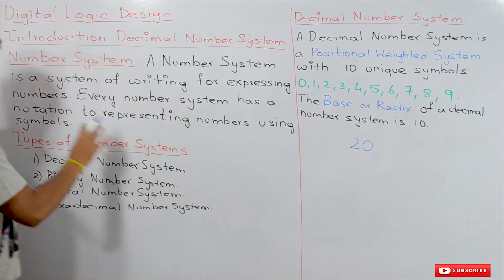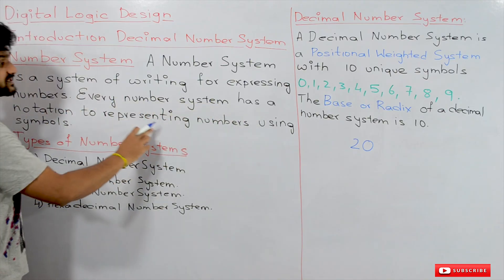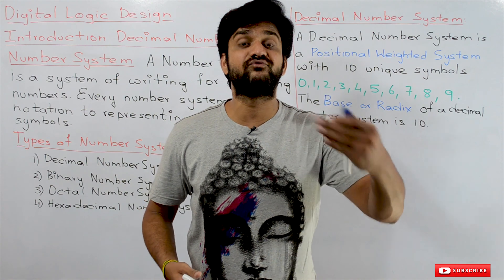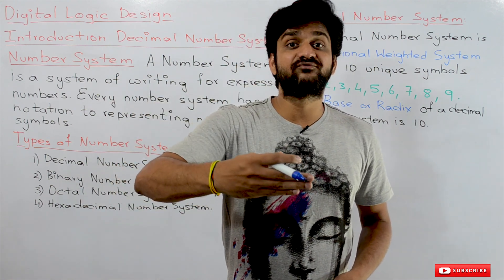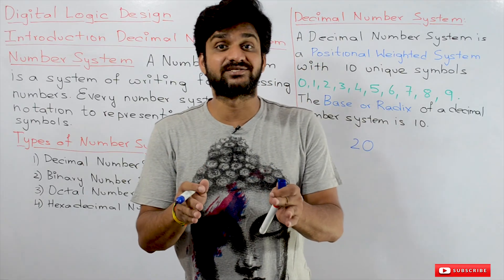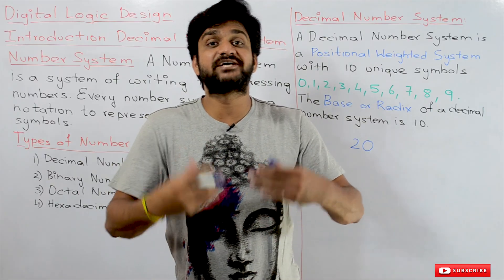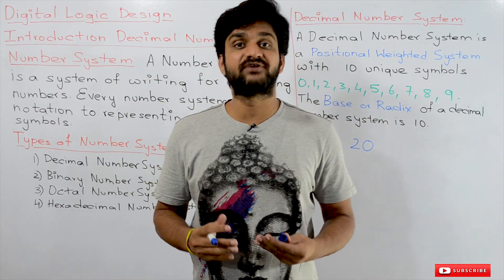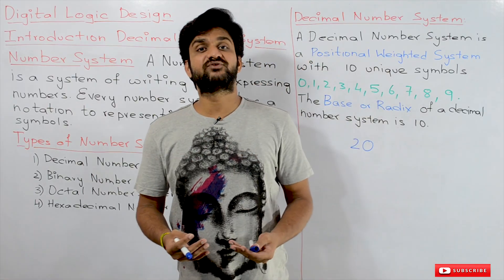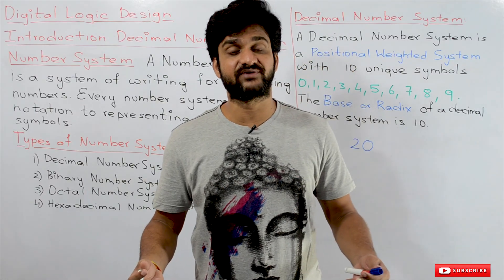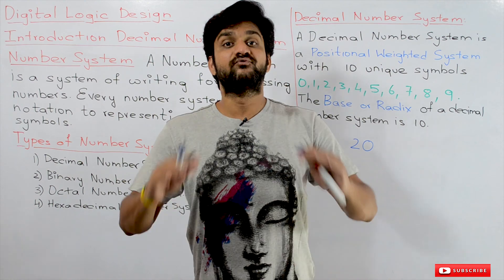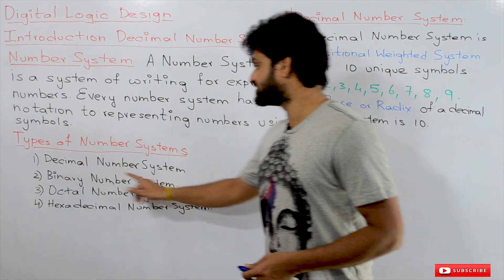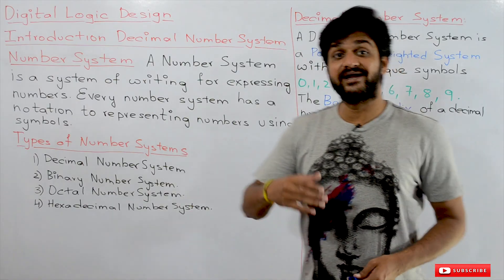Every number system has a notation to represent numbers using symbols. Every number system has its own way to represent numbers, and that way of representing numbers is what we call symbols. There are hundreds of number systems available, but in our course we will understand four types: decimal number system, binary number system, octal number system, and hexadecimal number system.